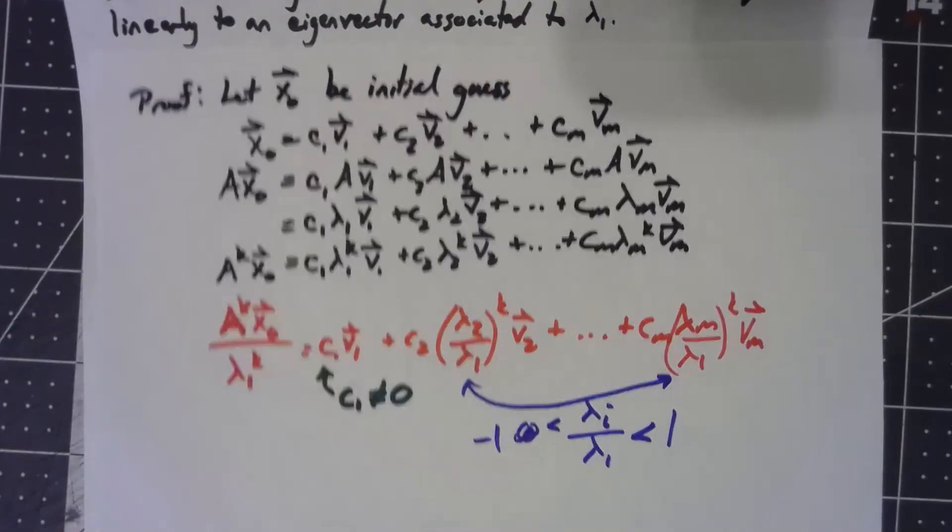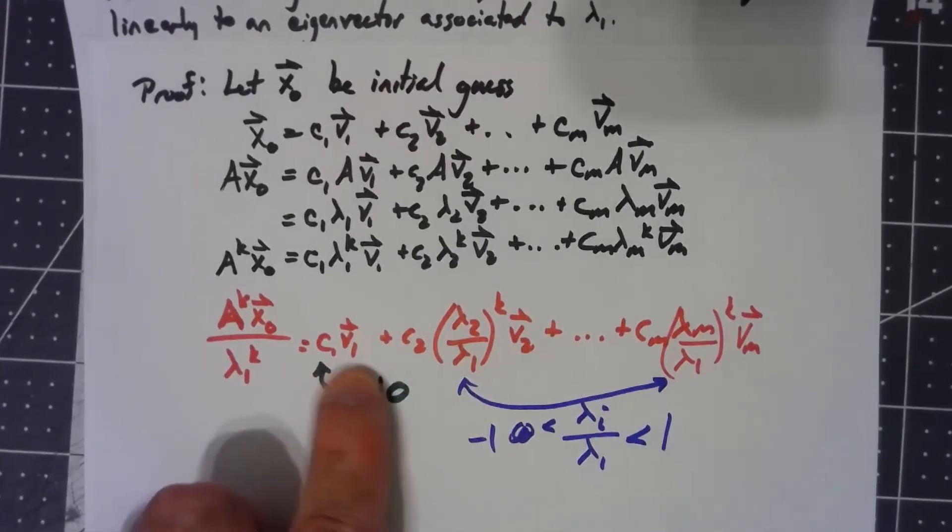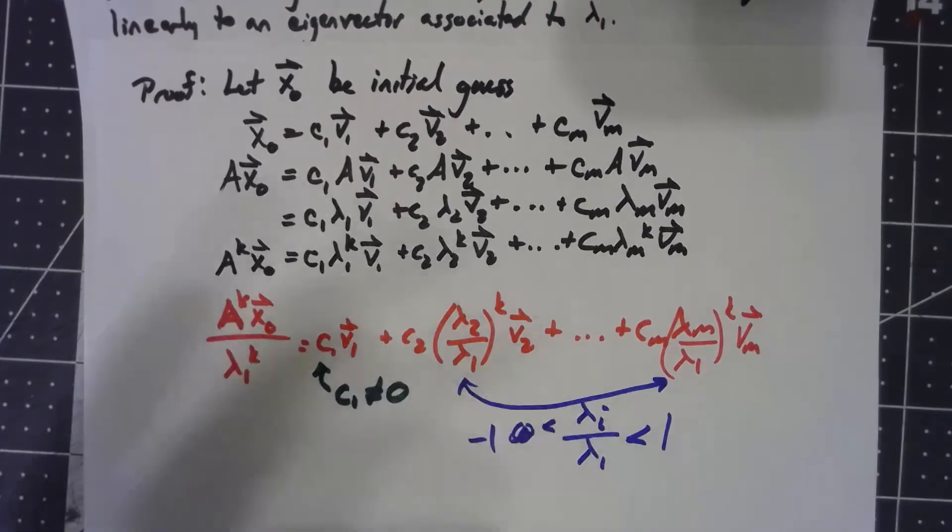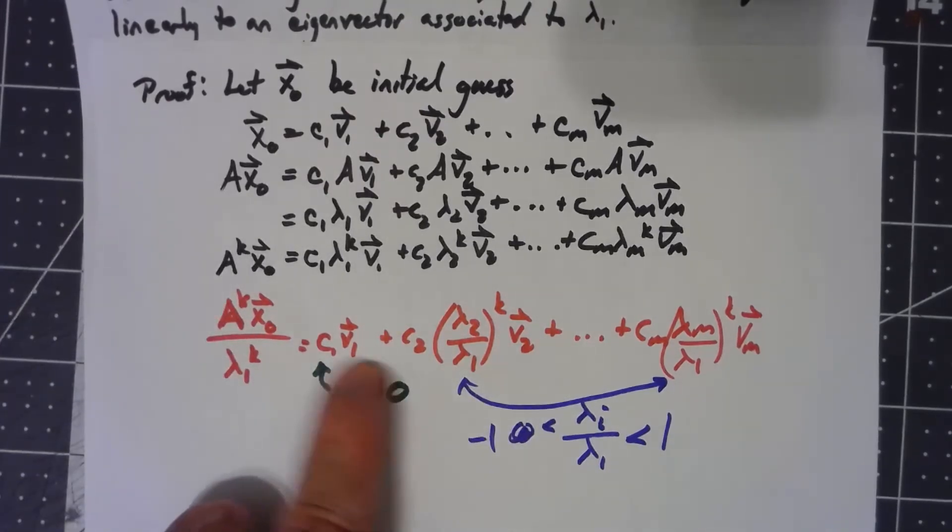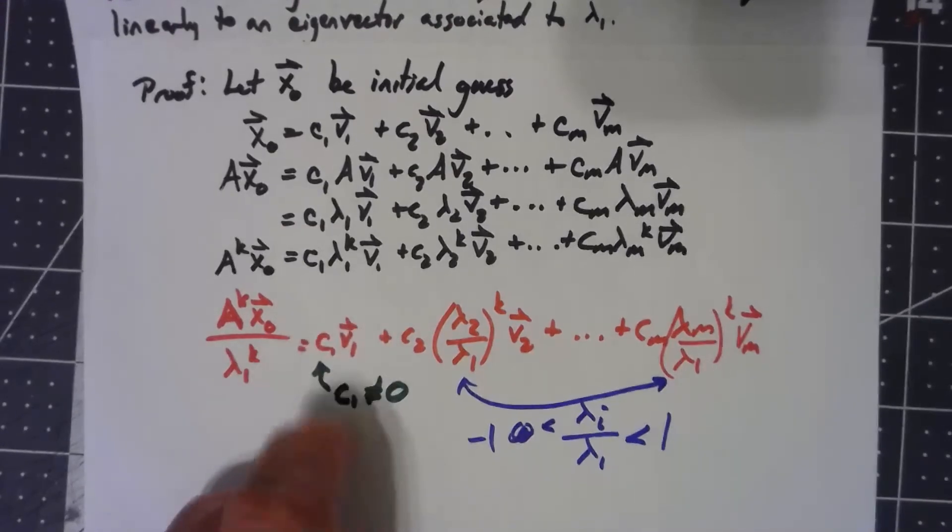Again, we're normalizing it, so we're actually converging to that thing divided by the norm of that thing. But the whole idea is that we're converging to this kind of thing.